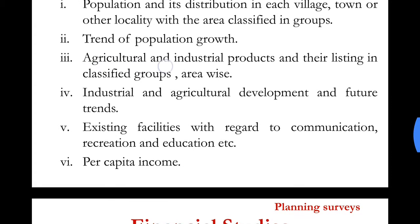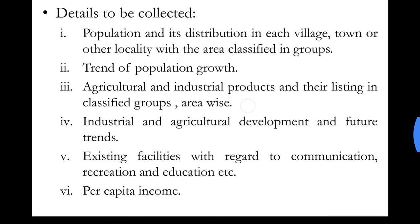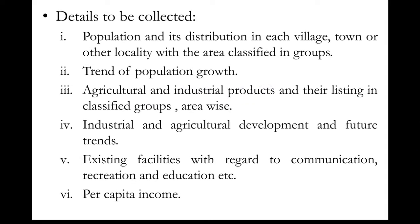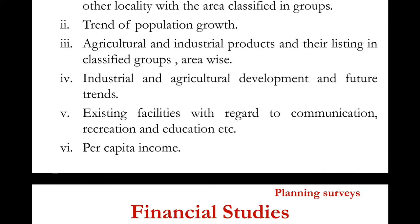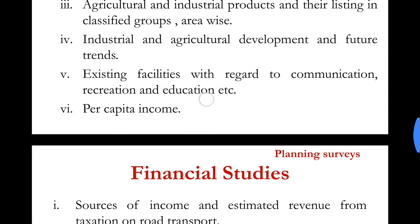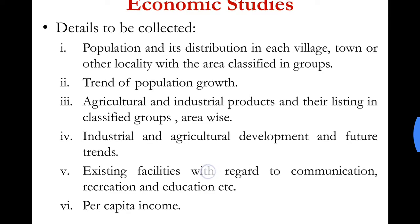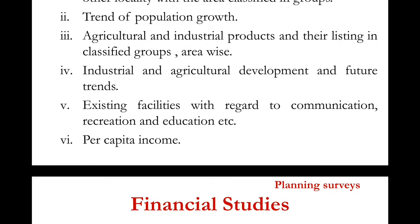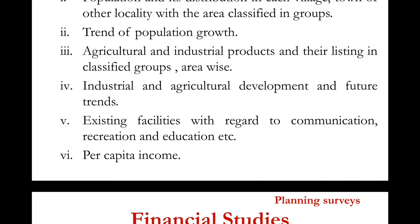Agricultural and industrial products and their listing in classified groups, area-wise, are recorded. Industrial and agricultural development and future trends, existing facilities with regard to communication, recreation, and education are examined, as all these factors affect the road network to be provided. Finally, per capita income — the income of each individual in one year — is also collected.